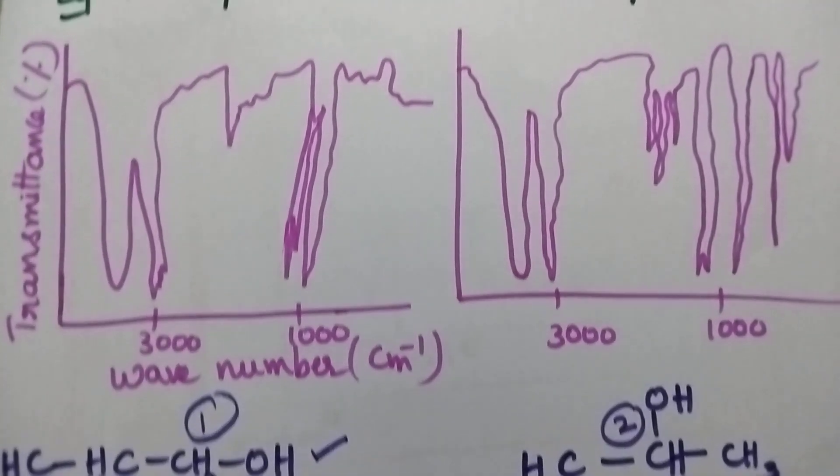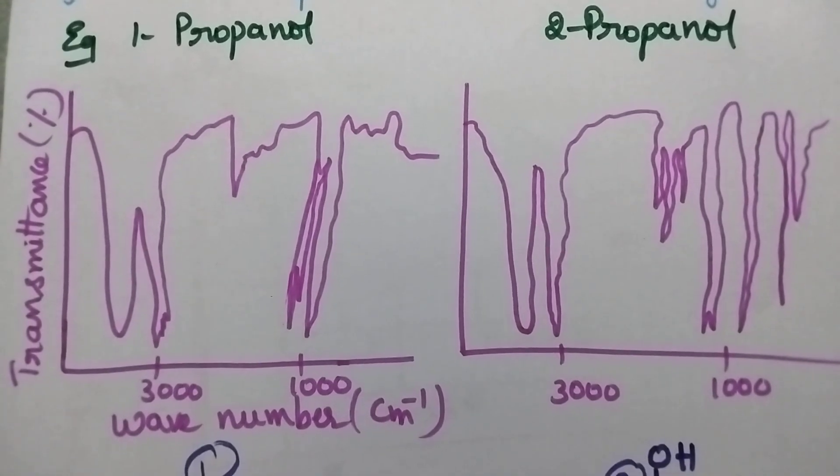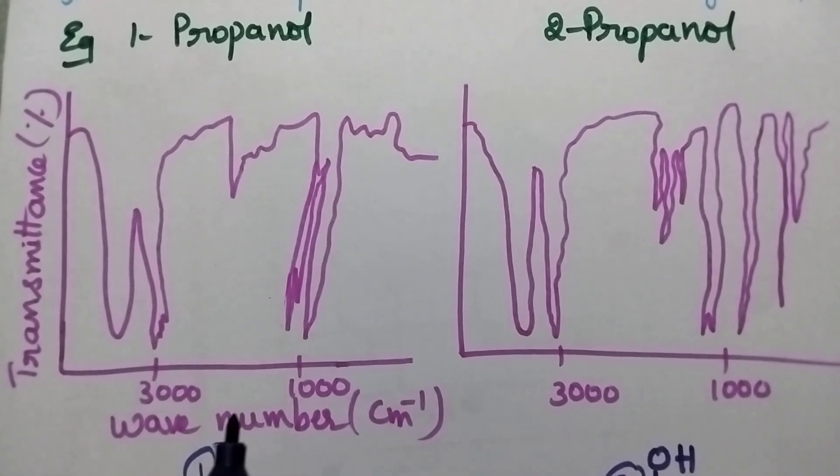With the help of the spectrum obtained in the fingerprint region, if you carefully observe the spectrum, always in the IR region a spectrum will be drawn between wave number and transmittance.